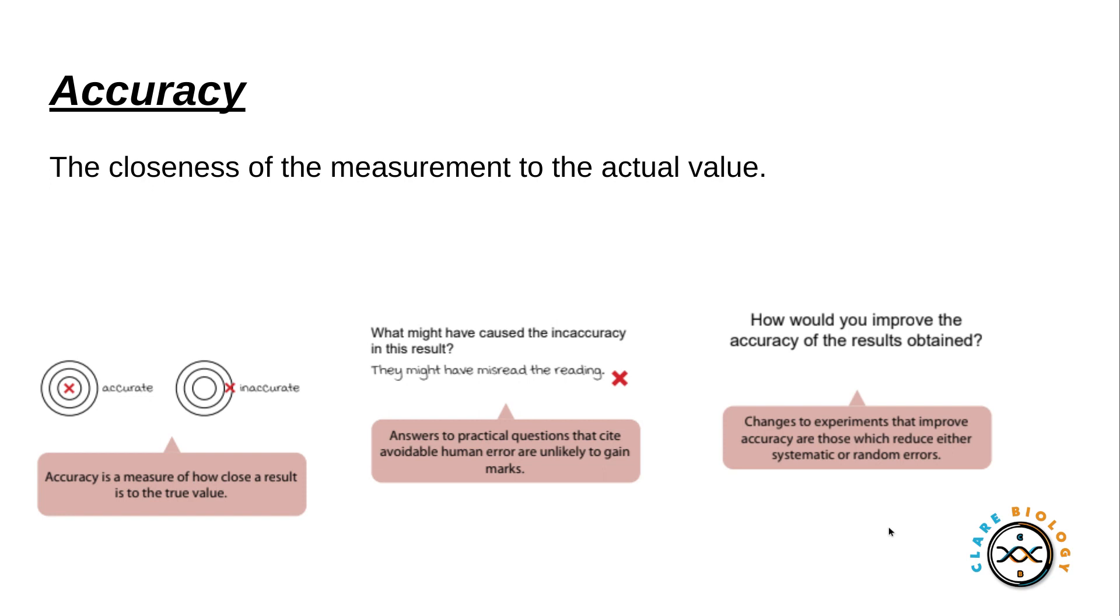For example, using a colorimeter rather than judging the eye color would be better because judging with your eye is subjective whereas using a colorimeter is not. This is an example of how we could improve the accuracy of the results.